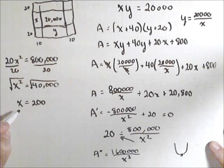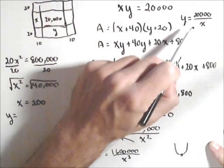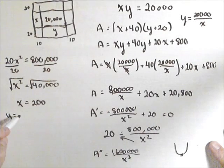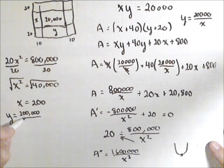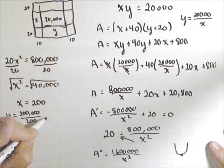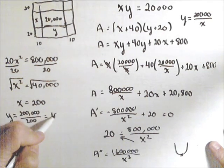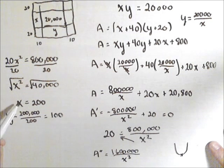So our min's going to happen when x is 200. To solve for y, we already have y in terms of x. So 20,000 over 200 equals 100.